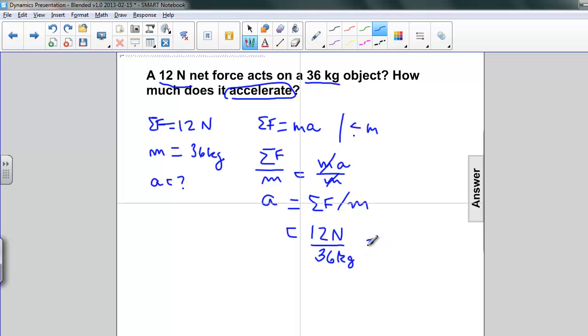And if we remember, 12 over 36. 36 is just 3 times 12, so this is one-third. And we have Newtons, which are kilogram meters per second squared. And we're dividing that by the kilograms down here.